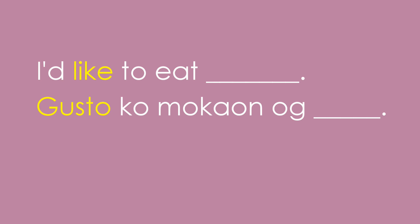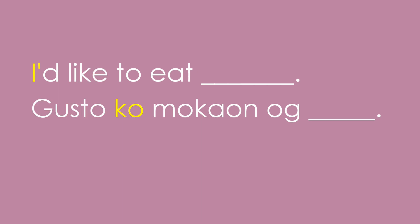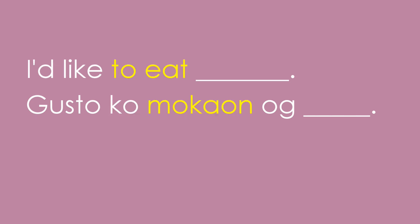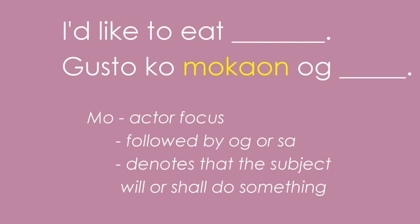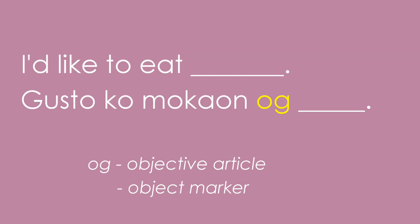Let's break it down. 'Like' is gusto. 'I' is ko. 'To eat' is mo ka on. The root word here is ka on, which means eat. Mo ka on is an actor focus, usually followed by og or sa. It denotes that the subject will or shall do something. Og here is an object marker, or an objective article — 'a' or 'an' in English.